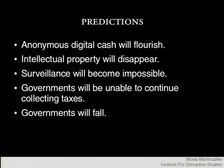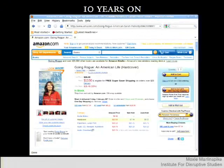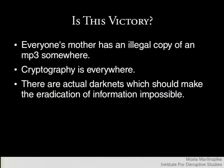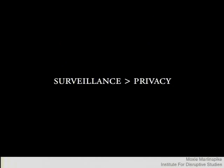However, their other predictions about what would happen once cryptography was everywhere were somewhat less prescient. These were things like: anonymous digital cash will flourish, intellectual property will disappear, surveillance will become impossible, governments will be unable to continue collecting taxes and eventually governments will fall. But if you flash forward 10 years after this victory, cryptography is the thing that allows you to securely transmit your credit card number to Amazon.com to buy a book. Sure, everyone's mother has an illegal MP3 somewhere, and there are actual dark nets that should make the eradication of information impossible. But surveillance is at an all-time high and privacy is probably at an all-time low.